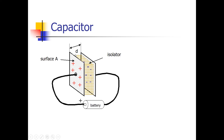A capacitor consists of two plates which have a surface A. These plates are separated from each other by a distance d, and in between these plates there is an isolator, which is a material that does not conduct any electricity. It could be paper, plastics, ceramics, or even a liquid like electrolyte, which is a chemical substance.